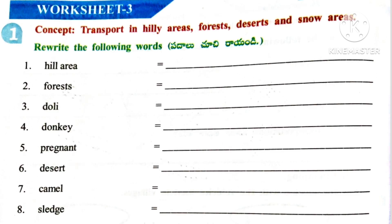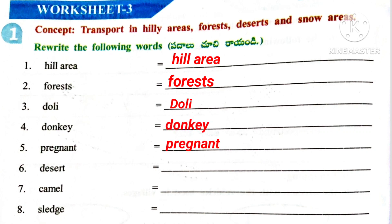Worksheet 3. Here the concept is Transport in Hilly Areas, Forests, Deserts and Snow Areas. Rewrite the following words: 1st one: Hill Area. 2nd one: Forests. 3rd one: Dolly. 4th one: Donkey. 5th one: Pregnant. 6th one: Desert. 7th one: Camel. Last one: Sledge.